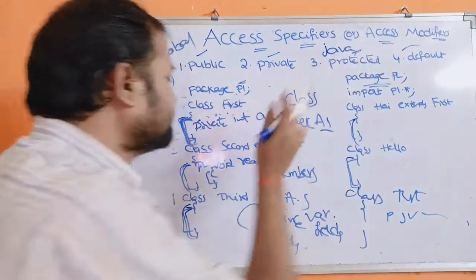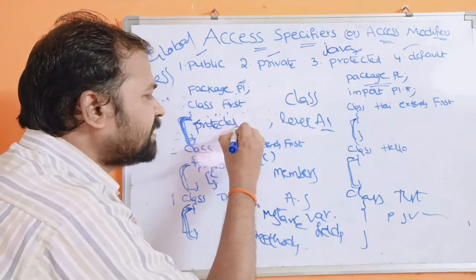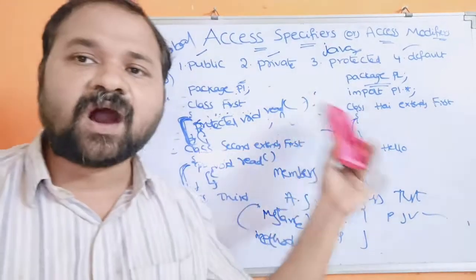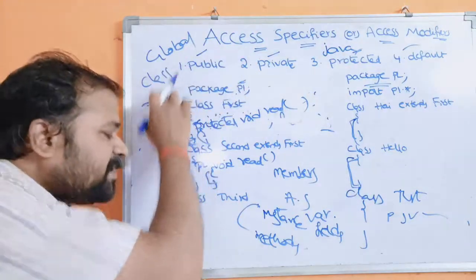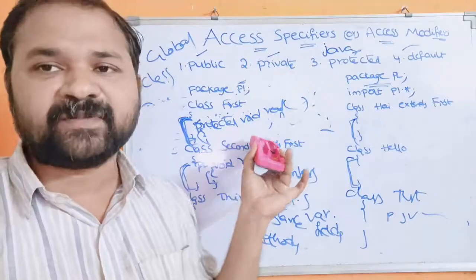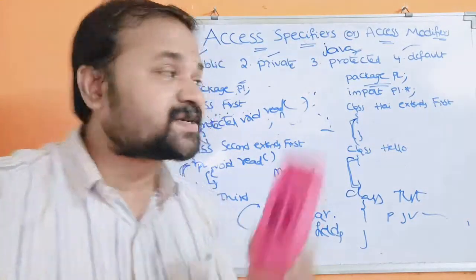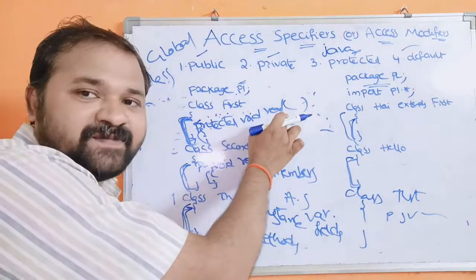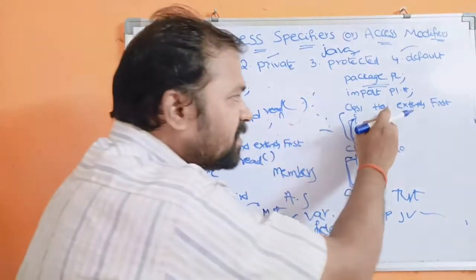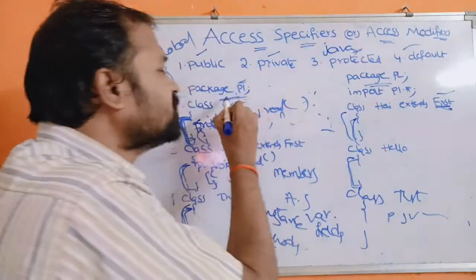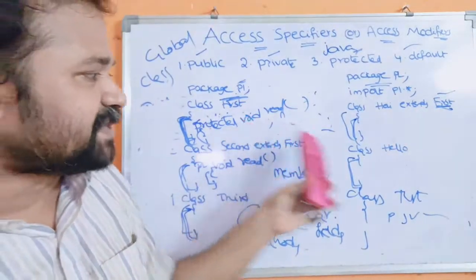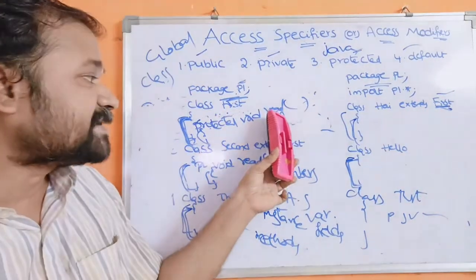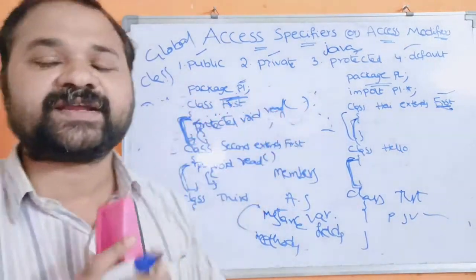Protected members are accessible anywhere in the same package. We can also access protected members from outside the package, but the class must be a subclass. For example, in the 'i' class we can access the 'read' method because 'i' is extending from the 'first' class. But in the 'hello' class or 'test' class we can't access 'read', because they are not subclasses of 'first'.